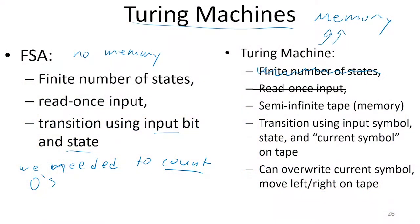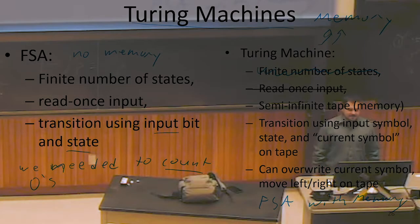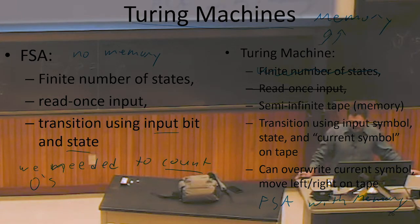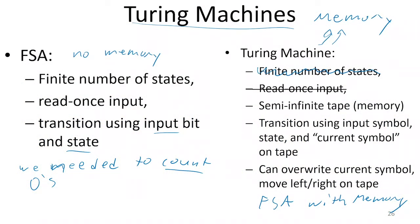Turing machines are basically a finite state automaton with memory. So if we have a finite state automaton and we slap some memory on it, we've got a Turing machine. With a Turing machine, we're still going to have our finite number of states just like with finite state automata. There is a finite state automaton sort of hidden within a Turing machine.